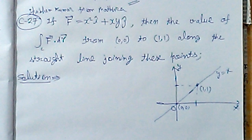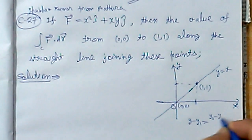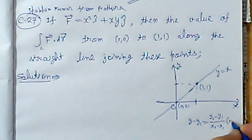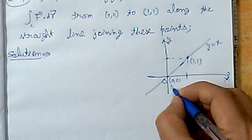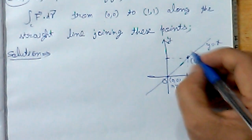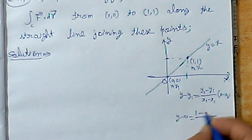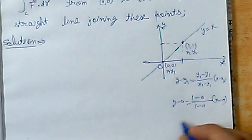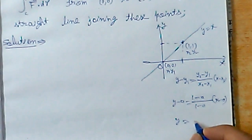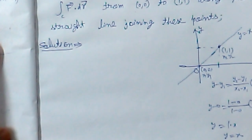Using the formula, this line equation y equals x can be found. The formula is y minus y1 equals (y2 minus y1) upon (x2 minus x1). For the line joining these two points, x1, y1 is (0,0) and x2, y2 is (1,1). So y minus 0 equals (1 minus 0) upon (1 minus 0) times (x minus 0). Therefore y equals 1 upon 1, which gives y equals x.